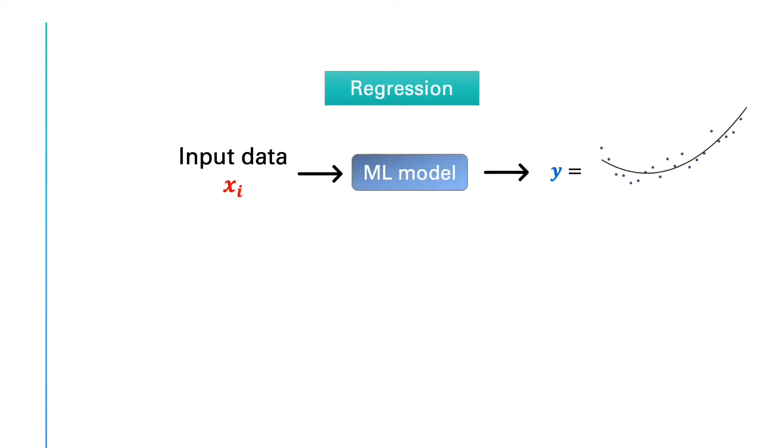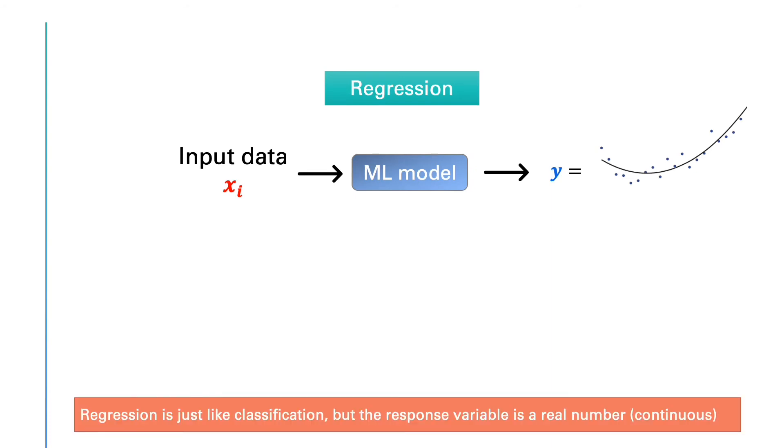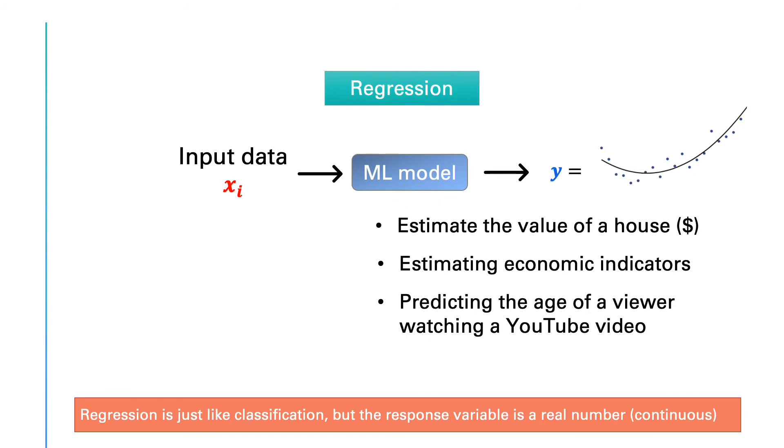On the other hand, regression problems are tasks where you are estimating a real numerical value. For example, I may want to predict the value of a house in dollars. As the input variables, you could think of the number of bedrooms, square footage, location, year of construction, etc. The output of our machine learning module might range from a few thousand dollars to millions of dollars. So, in this case, the output can be considered as a continuous variable. Other examples of regression tasks include estimating some economic indicators, such as inflation, GDP, unemployment rate, and so on. Or estimating the age of a viewer watching a YouTube video. In general, regression is similar to classification, but the response variable is a numerical value that can be considered to be a real number.